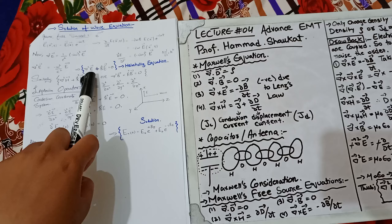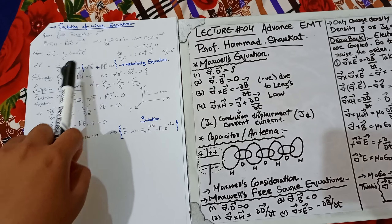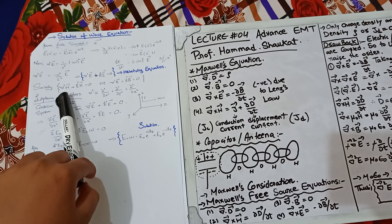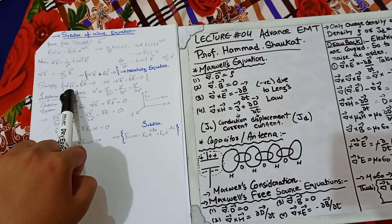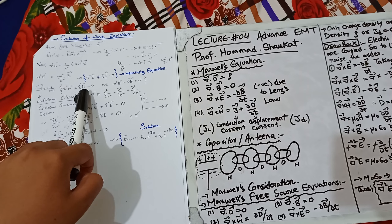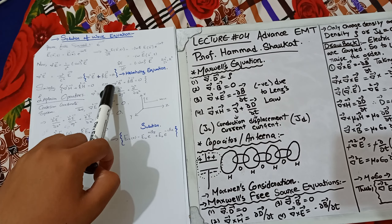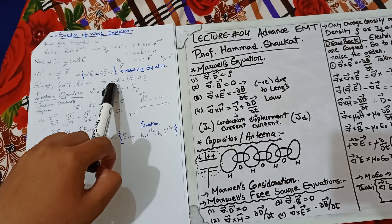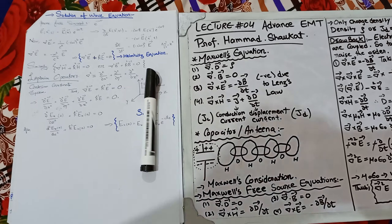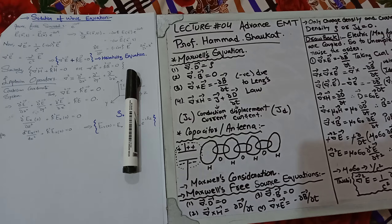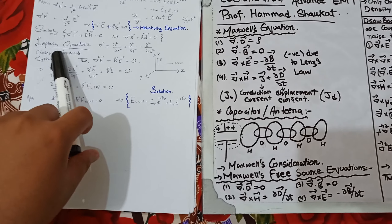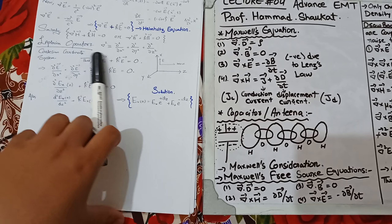Similarly, the Helmholtz equation can be written for the magnetic field: del squared H + k² H = 0, and also del squared B + k² B = 0.